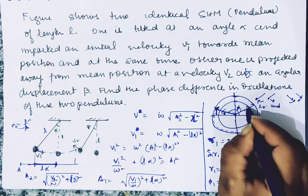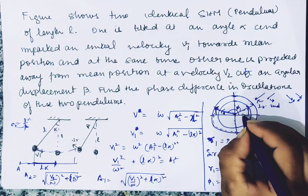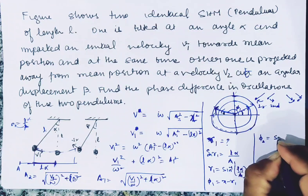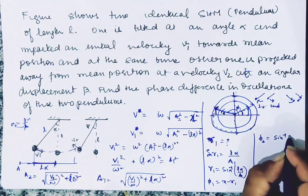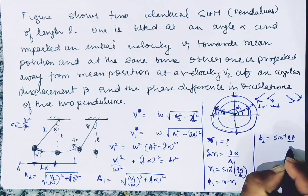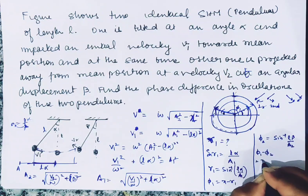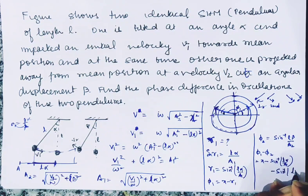पहले pendulum का phase φ1: यह mean position की तरफ आ रहा है, L×alpha travel कर चुका है। sin(γ1) = Lα/A1, तो γ1 = sin⁻¹(Lα/A1)। चूँकि second quadrant में है, φ1 = π - sin⁻¹(Lα/A1)। दूसरे pendulum का phase φ2 = sin⁻¹(Lβ/A2) directly। Phase difference = φ1 - φ2 = π - sin⁻¹(Lα/A1) - sin⁻¹(Lβ/A2). This is the answer.